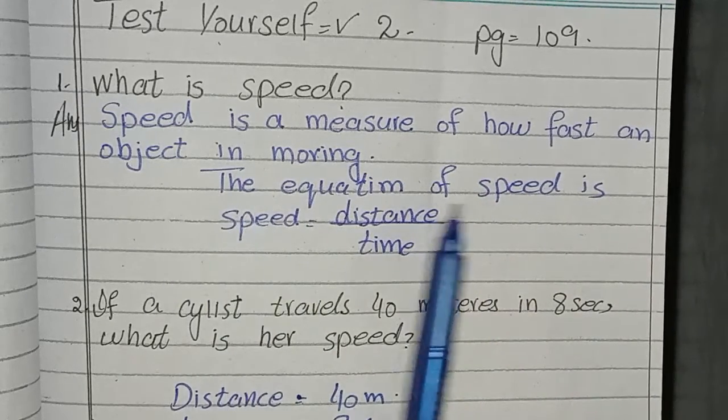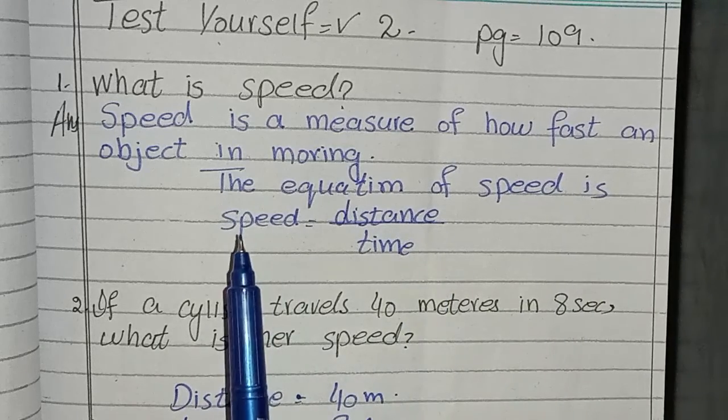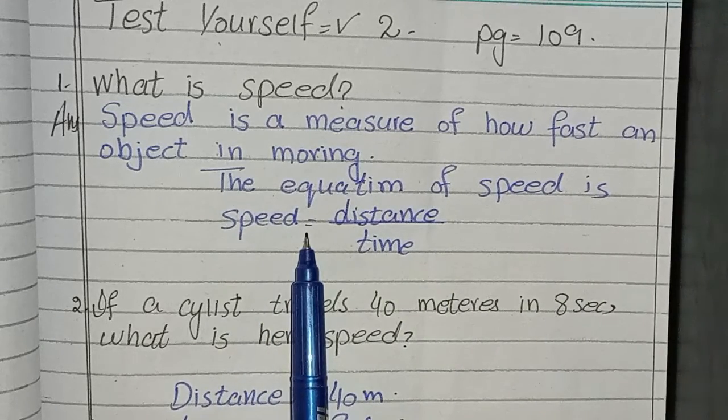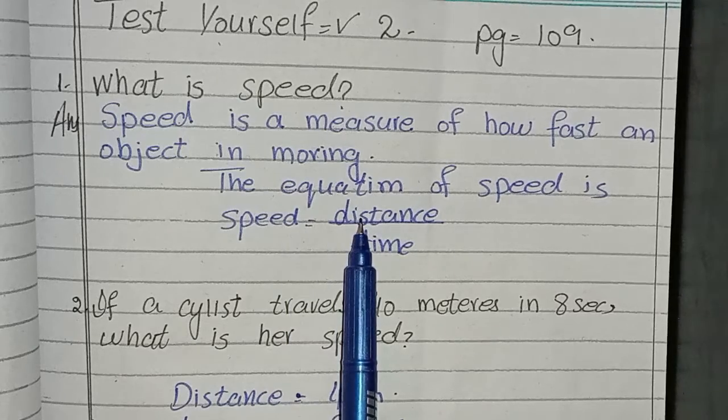The equation of the speed is: speed equals distance over time. You have to write speed equal to distance over time.